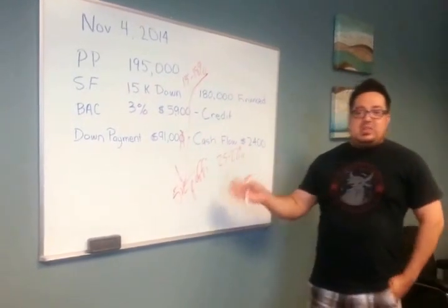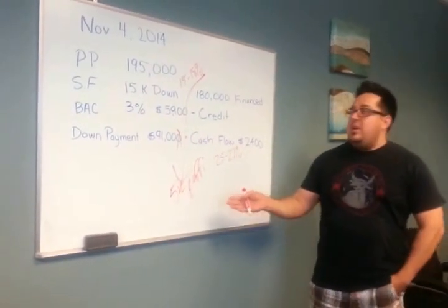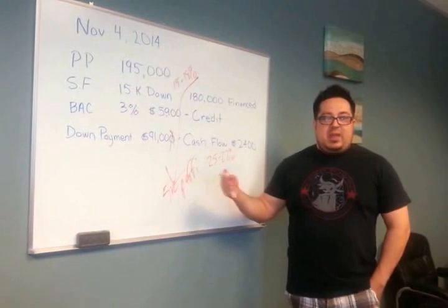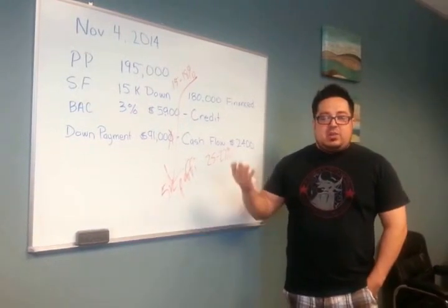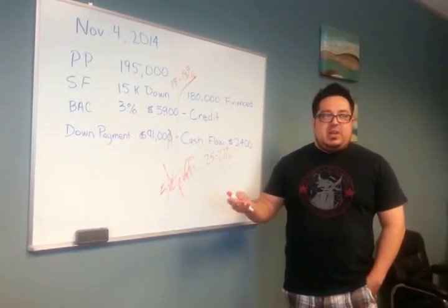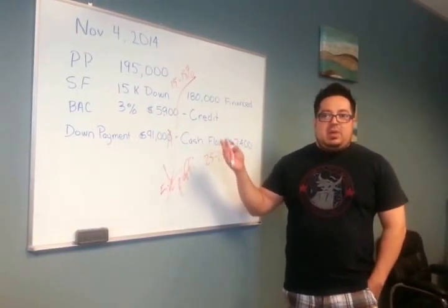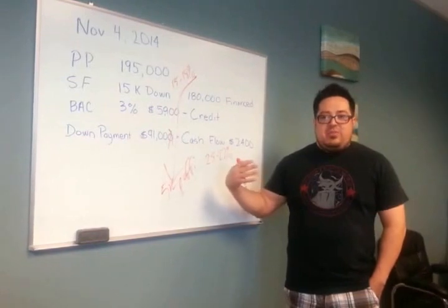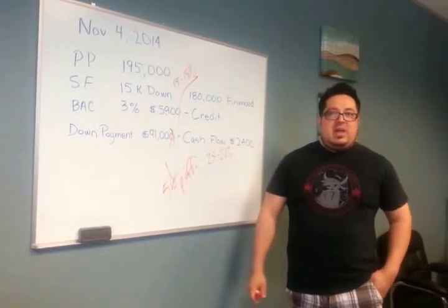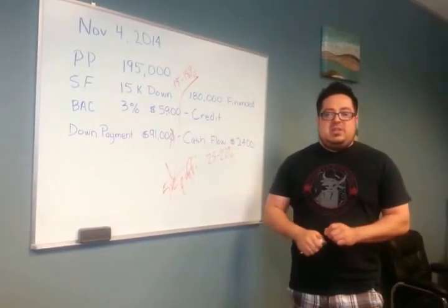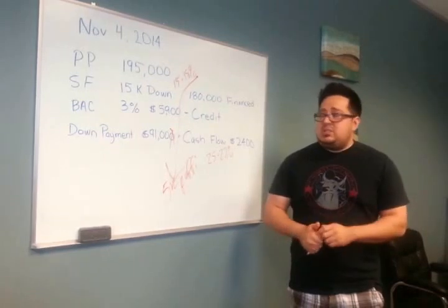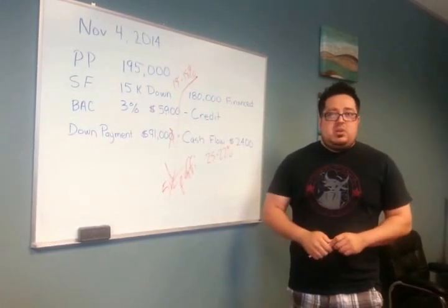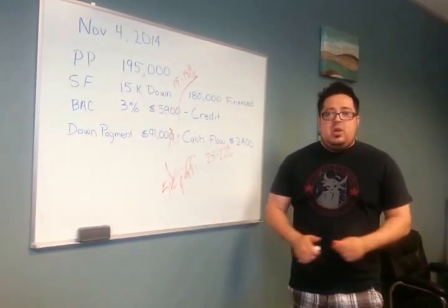Taking it one step further, you could do a wrap with this property — increase the interest rate and have them finance your money up front. Because we're all in different tax situations, there's a difference in how we're taxed if we earn interest versus if we take a commission as a broker or a wholesaler.